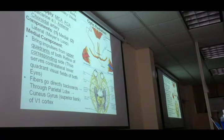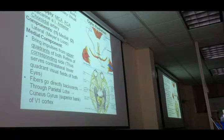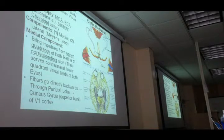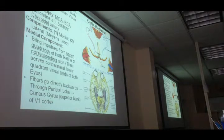The same principle holds for the LGB, because 90% of the fibers of the optic tract are synapsing in the LGB. So the LGB also receives fibers from the same half of both retinas. The next order of neurons from the LGB — the optic radiation — also serves the same half of both retinas. The left optic radiation is receiving fibers from the left half of the left retina and the left half of the right retina, and vice versa.